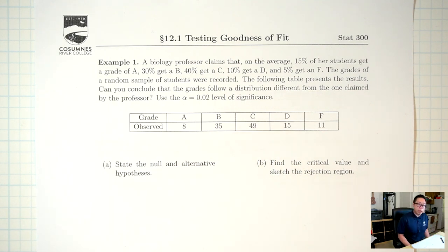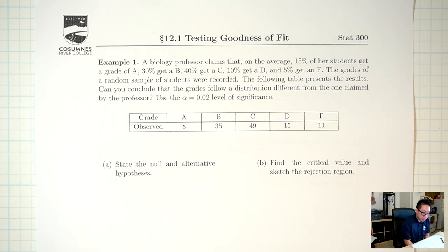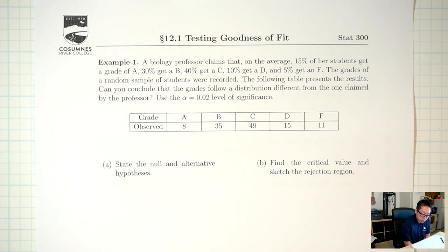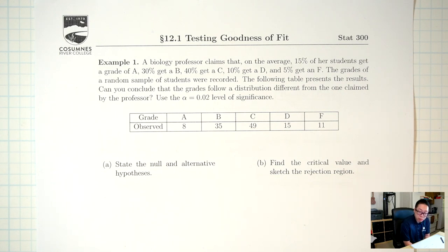Let's jump into example one. A biology professor claims that on average, 15% of students get an A, 30% get a B, 40% get a C, 10% get a D, and 5% get an F. The grades of a random sample of students were recorded. Can you conclude that the grades follow a distribution different from the one claimed by the professor?